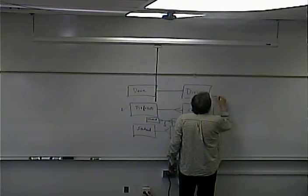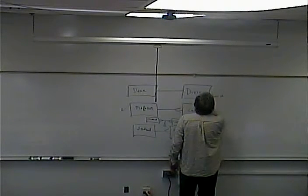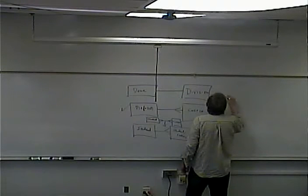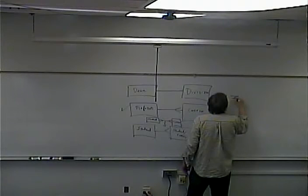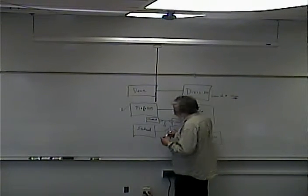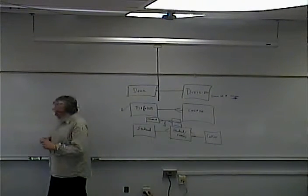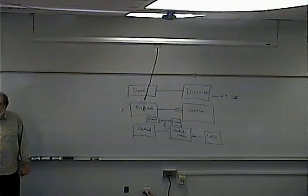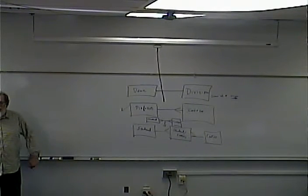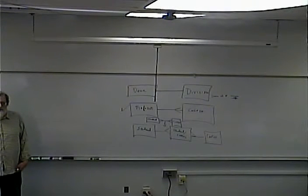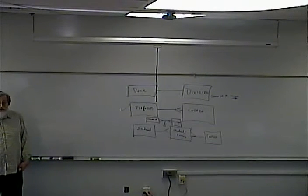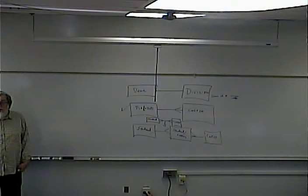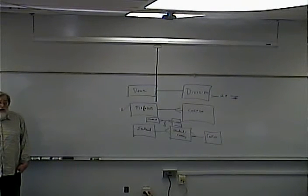The way that you implement a one-to-one is you create a unique index. You can do it either way — you could put the division ID in the dean table or the dean ID in the division table — and you create a unique index. What's an index in databases?